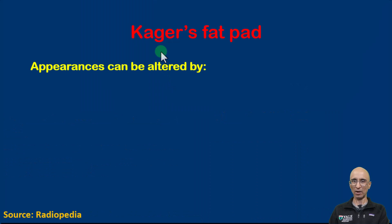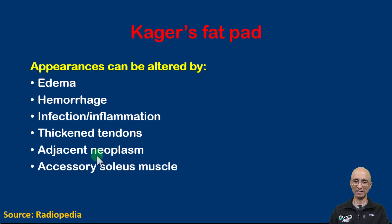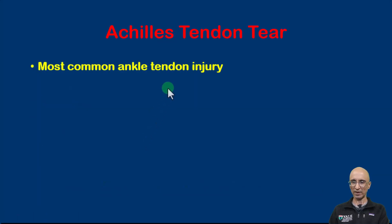Kager's fat pad appearances can be altered by various pathologies, namely edema, hemorrhage, infection, inflammation, thickened tendons, adjacent neoplasm, or accessory soleus muscle. However, in the setting of trauma it is important to exclude underlying bone or soft tissue injury.